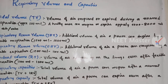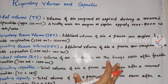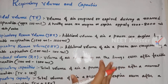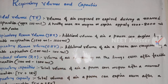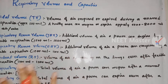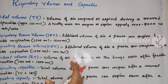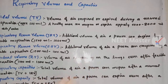First, tidal volume. Tidal volume is the volume of air inspired or expired during a normal respiration. We can inspire or expire this volume of air during a normal breath. In one breathing cycle, it is 500 ml.